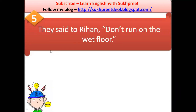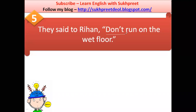Fifth question: 'Don't run on the wet floor.' Sentences that start with 'don't' are imperative sentences expressing forbiddings. Forbiddings mean you are telling someone not to do something. So here, Rehan is being forbidden.